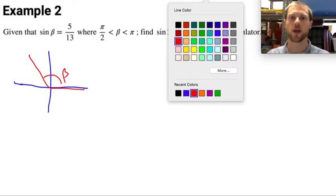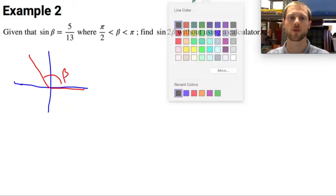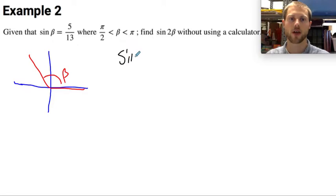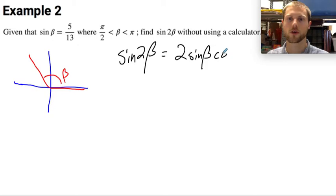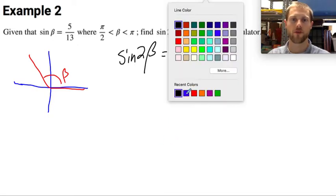So I want to find the sine of 2 beta. Well, let's bring up what the formula is for the sine of 2 beta. Sine of 2 beta equals 2 times the sine of beta times the cosine of beta. All right, let's see what I have to work with.